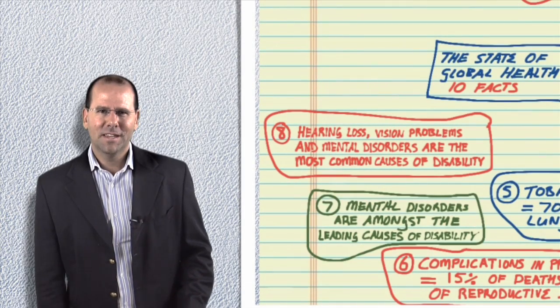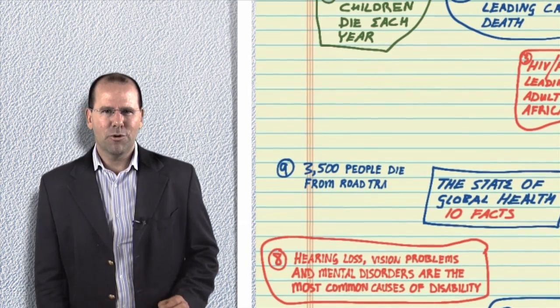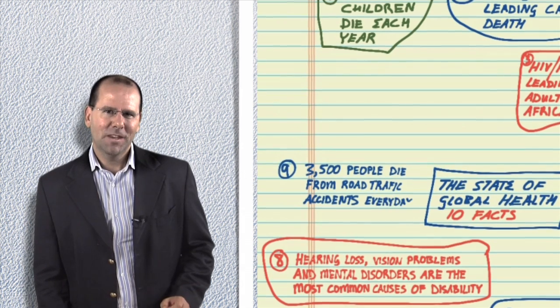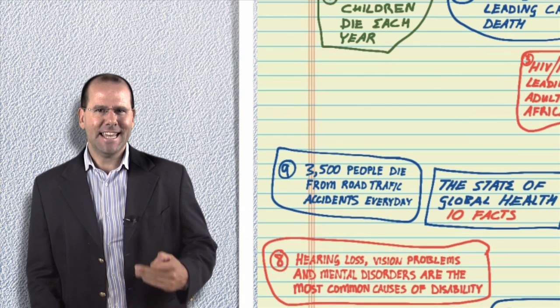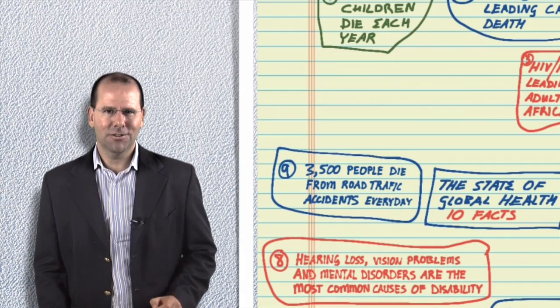Fact number nine: nearly 3,500 people die from road traffic accidents every single day. Road traffic injuries are projected to increase as rising income levels in developing countries leads to increased vehicle ownership.